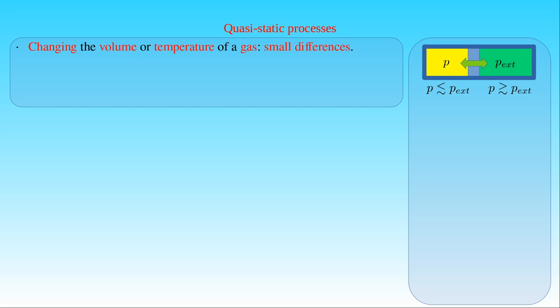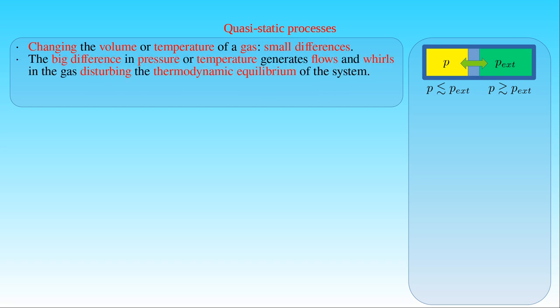For if the external pressure was much greater or smaller than that of the gas in the system, the movable wall could move fast enough to generate flows and whirls in the contracting or expanding gas. As a result, the sudden change in the volume of the gas would disturb the stationary state of the gas, that is the equilibrium of the thermodynamic system.